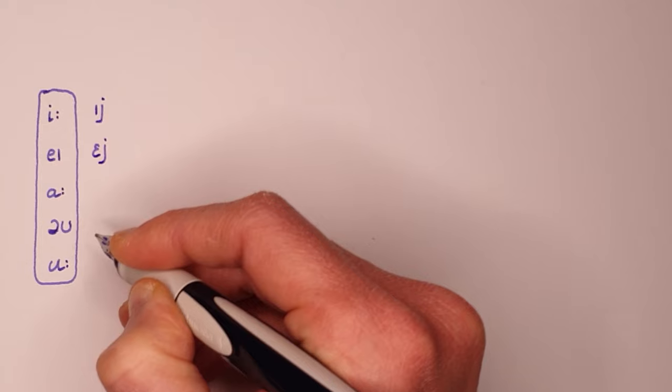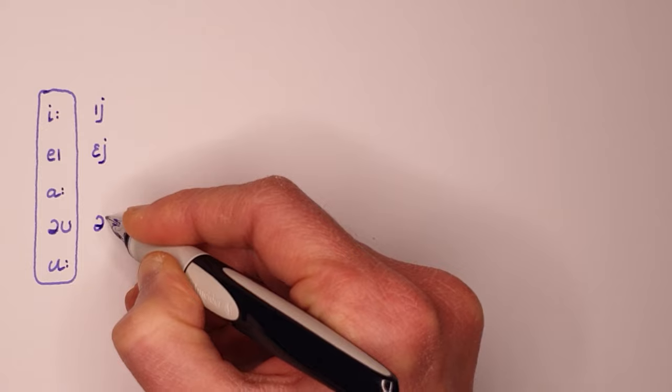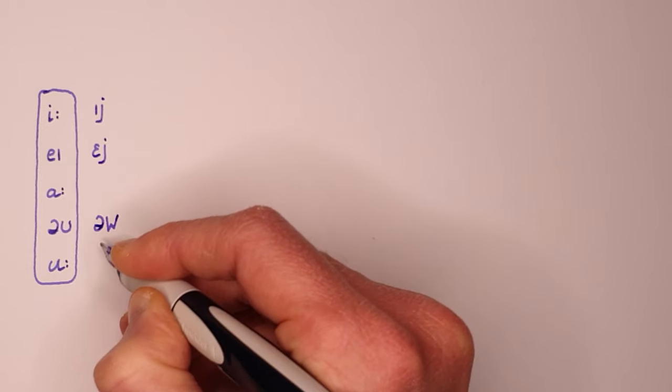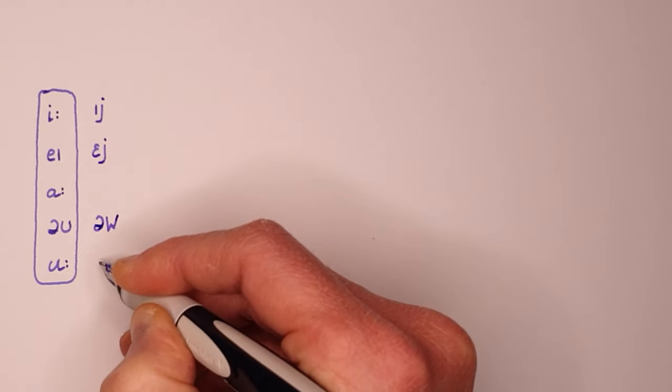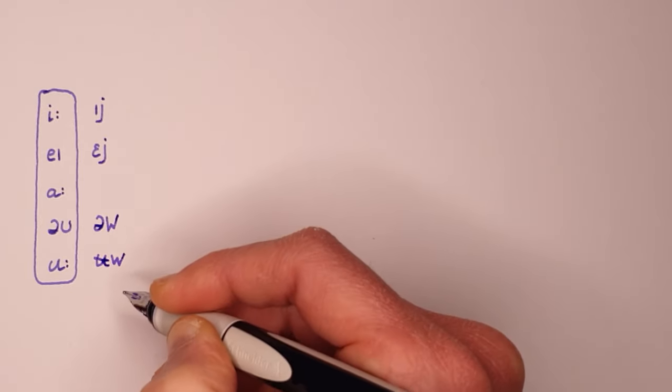Similarly, the closing diphthong in goat ends with the glide y, goat, and the closing vowel in goose breaks into a closing diphthong ending with the glide y, goose.